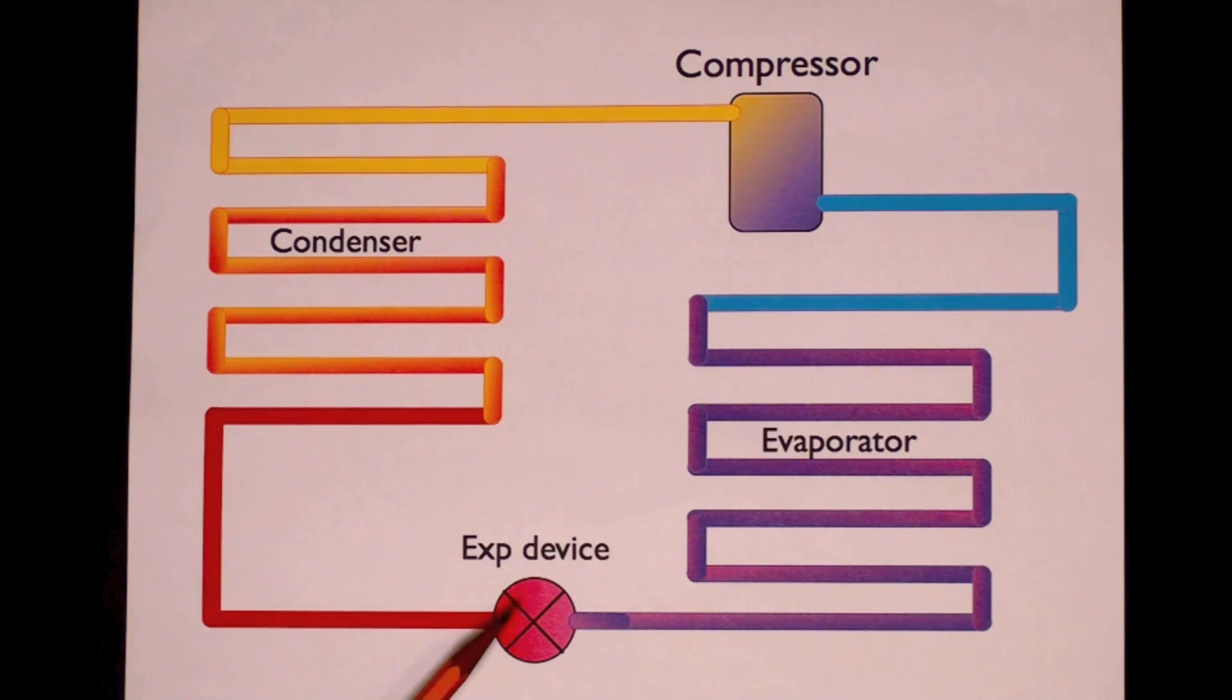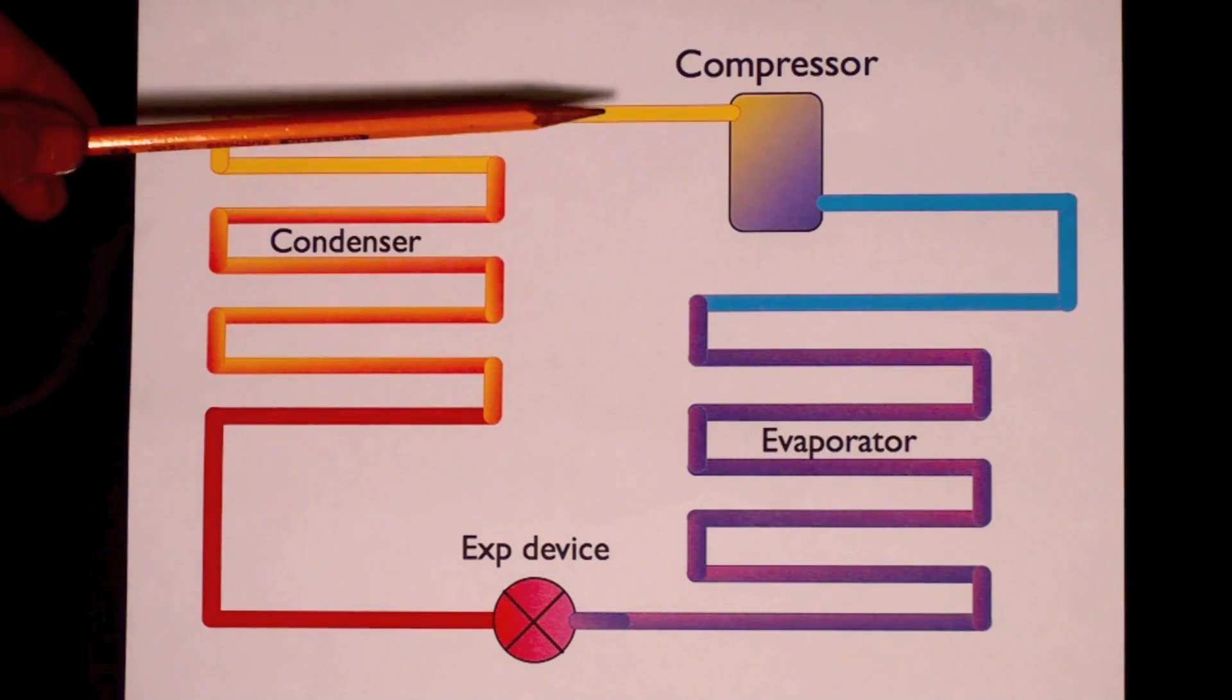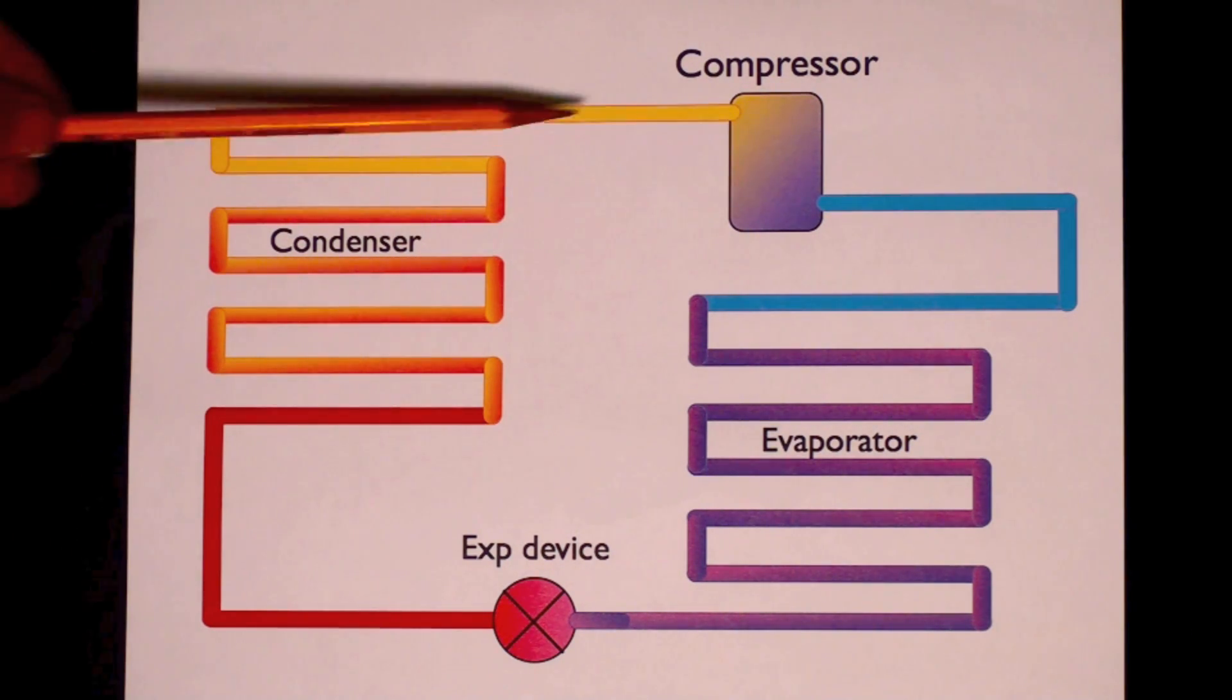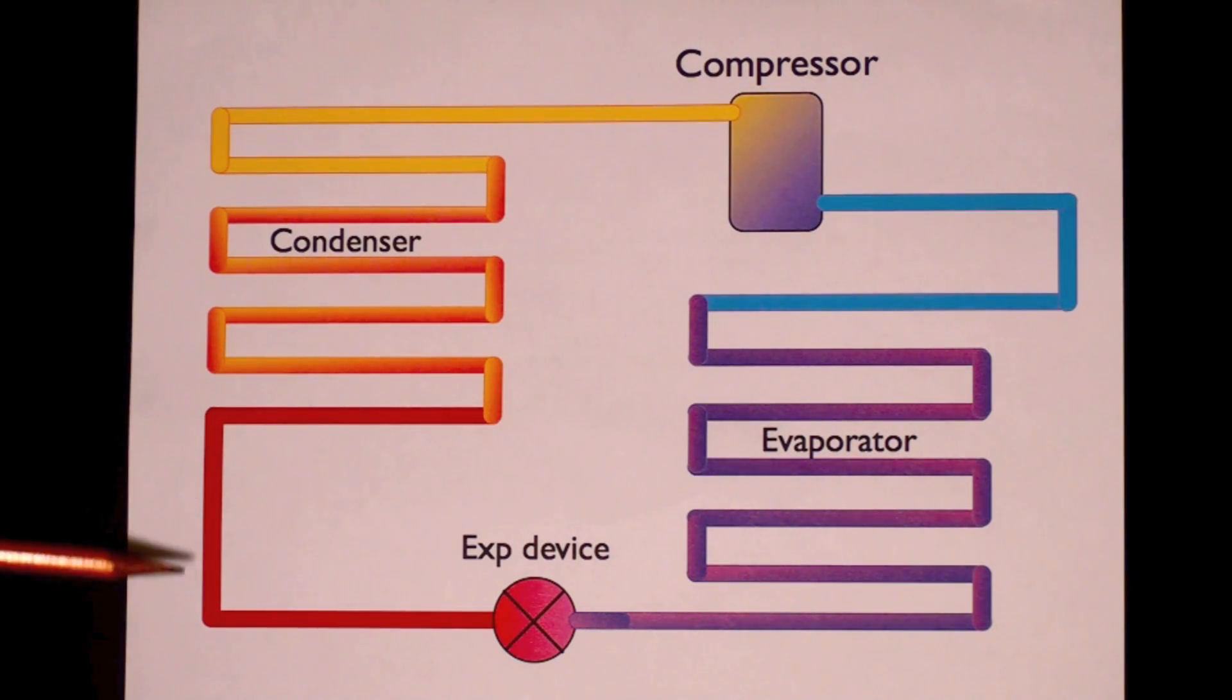Splitting the high side and low side is the expansion device. Now I said high side and low side because the compressor is high pressure here because my refrigerant is moving along this way. It goes down to here and it hits this expansion device. The expansion device is very important. It can be very simple, depending on what type is used.